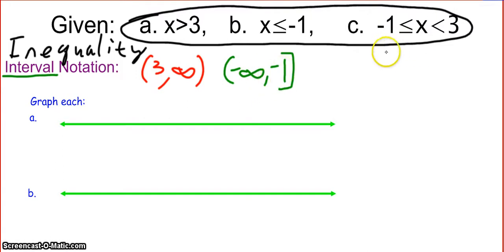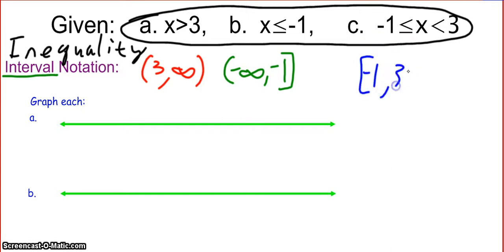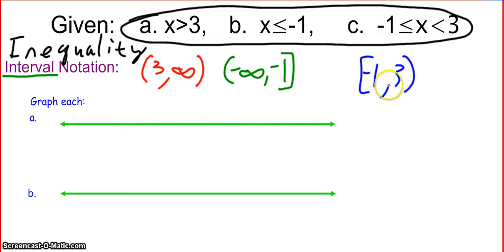And then the last one here — interval notation is going to be negative 1, comma, 3, with a bracket on the negative 1 and a parenthesis on the 3. So that's [-1, 3), because we are including negative 1, we are not including 3, and x is everything in between there.